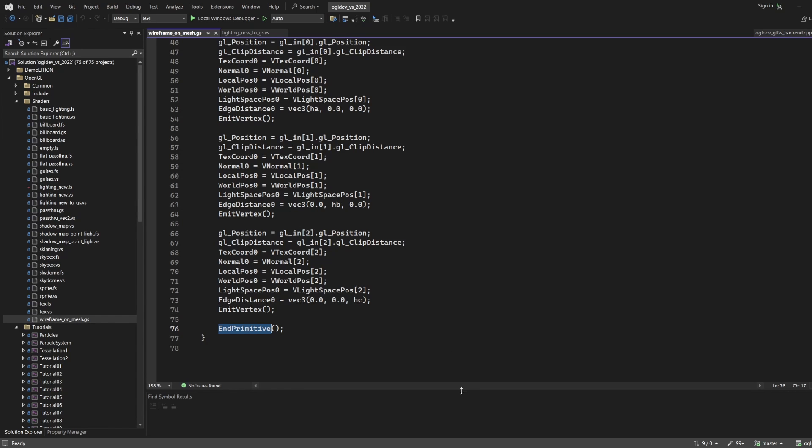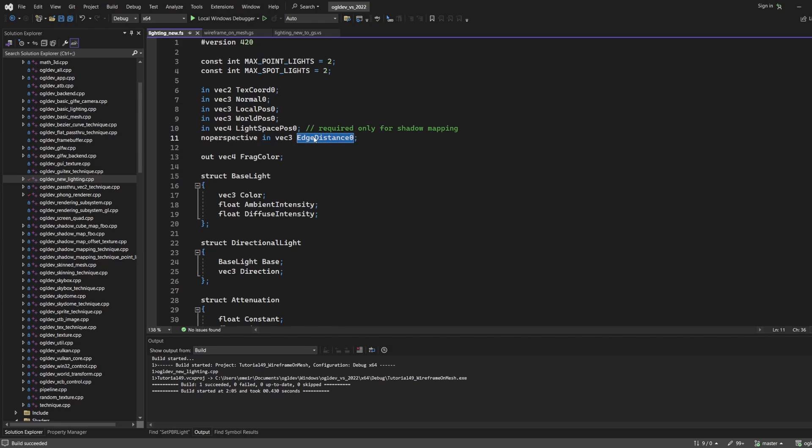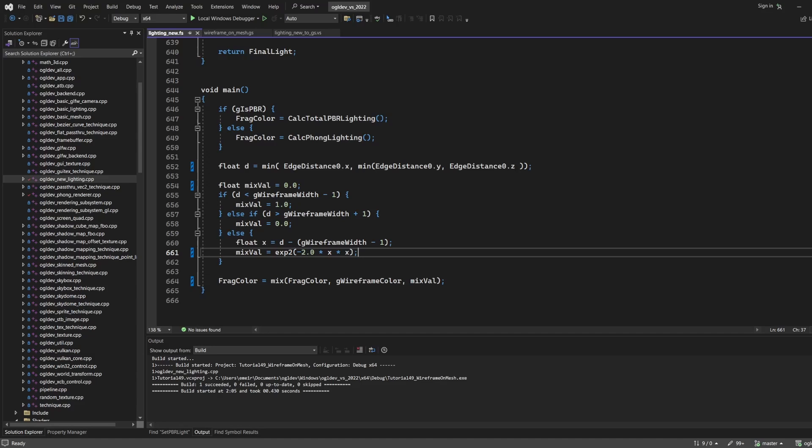We are almost done. We just need to use the edge distance attribute in the fragment shader. Remember that we have to use the noperspective qualifier here as well. At the end of the main function, we find the minimum between the three components of the interpolated edge distance. The final fragment color will be calculated by interpolating between the original color from the lighting system and the configured wireframe color, so we need to provide an interpolating term.